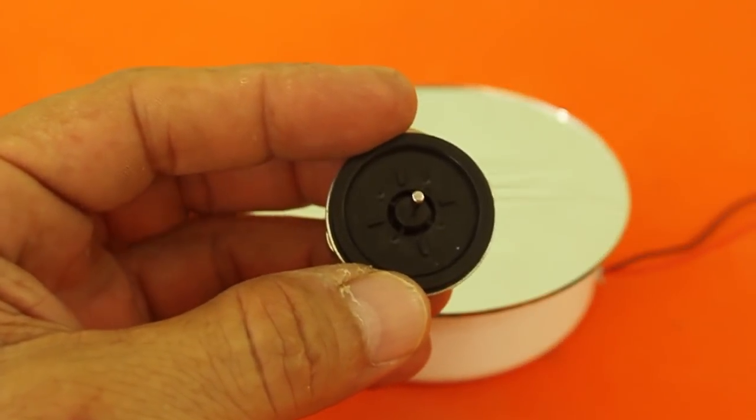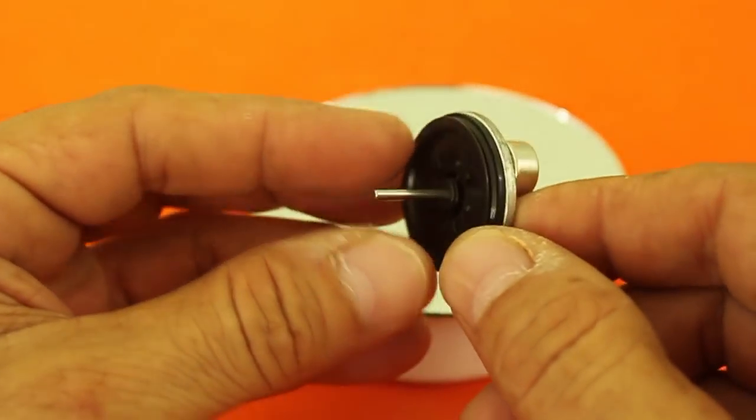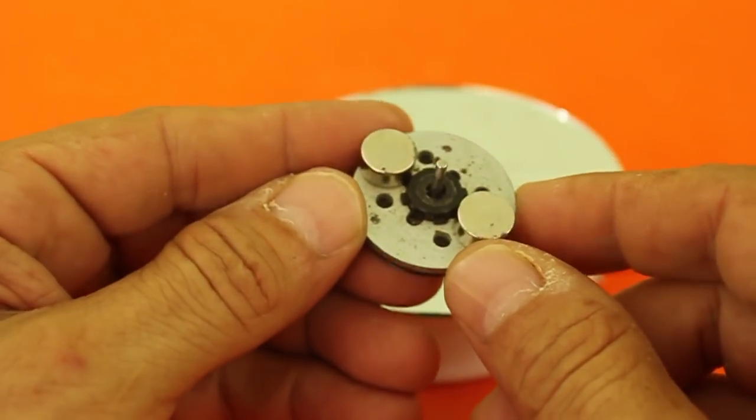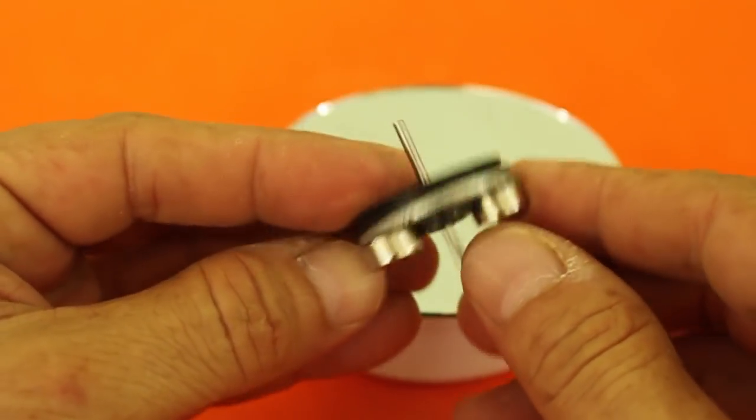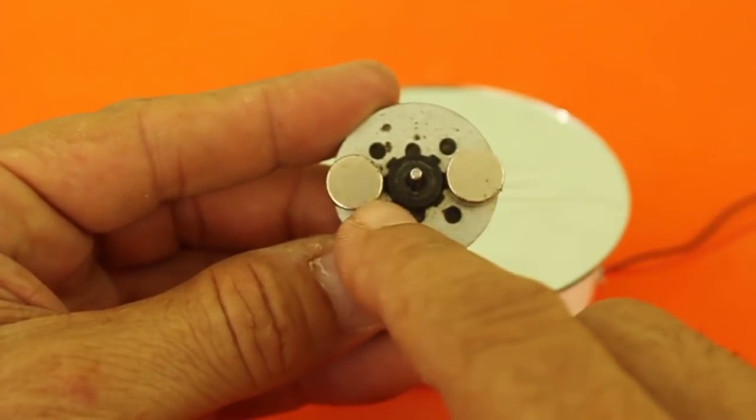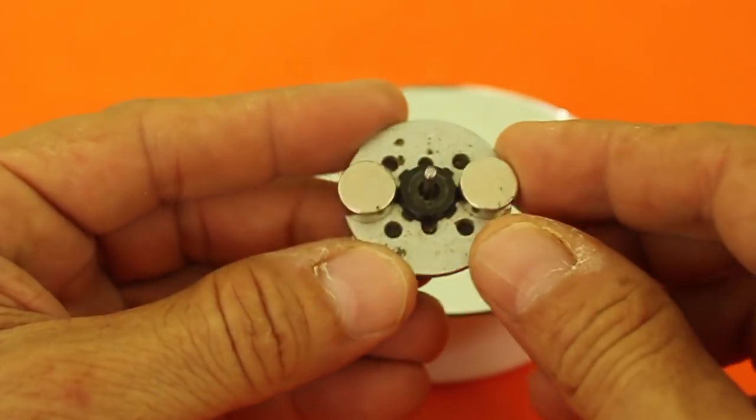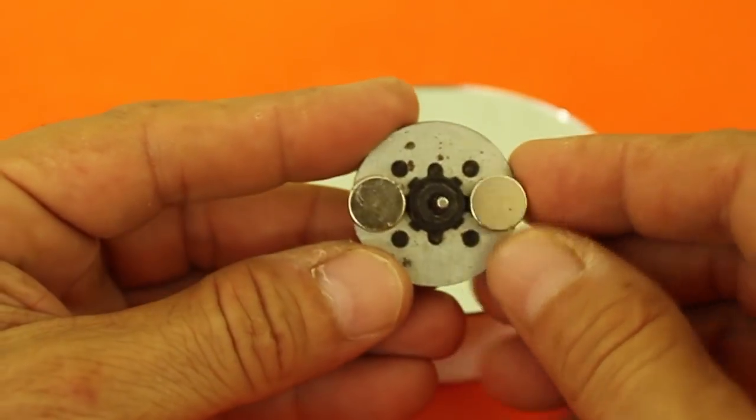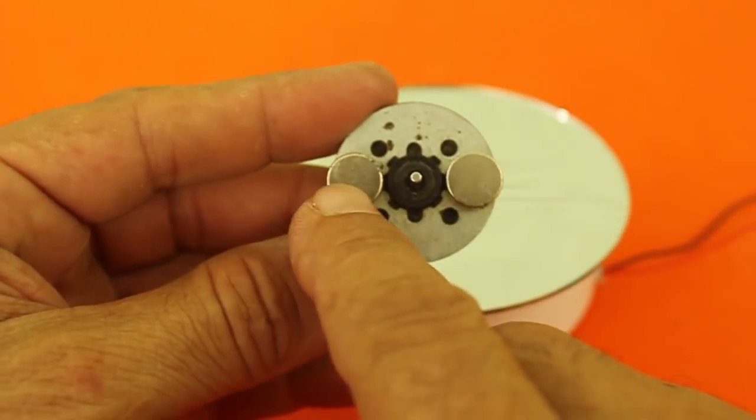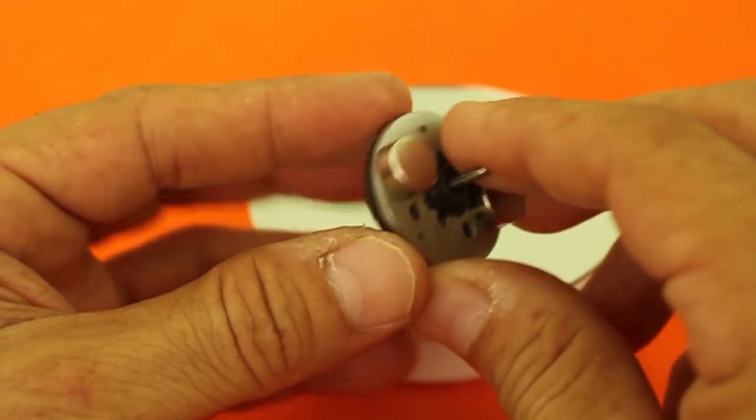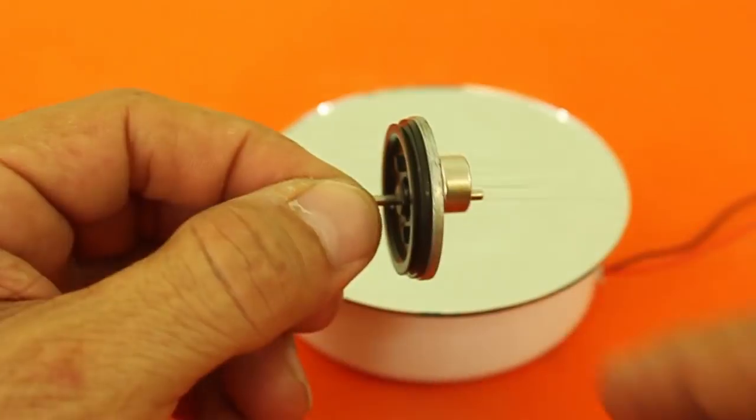The spinning top is nothing more than a pulley that I got from an old cassette recorder, and it has a couple of neodymium magnets in the lower part. The magnets must be perfectly collinear with the center, otherwise it will be unbalanced.